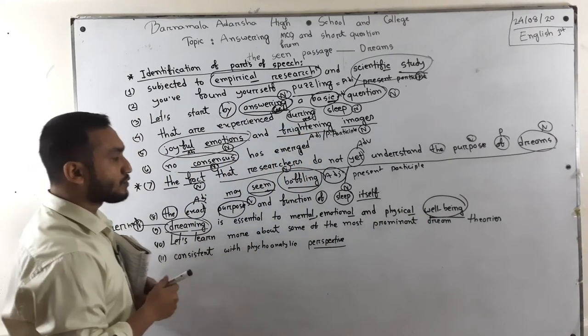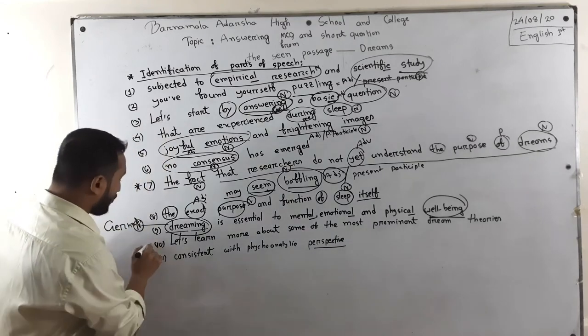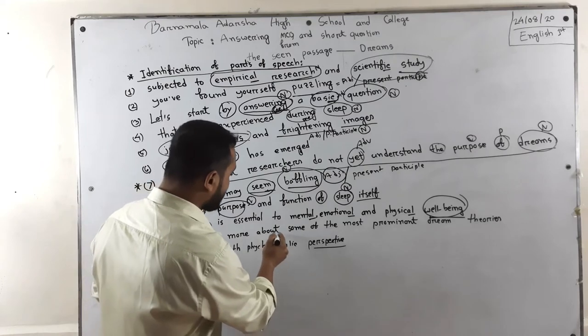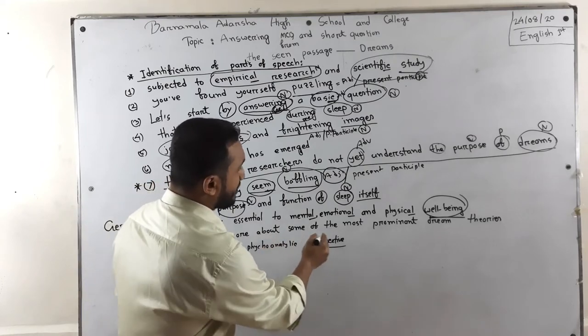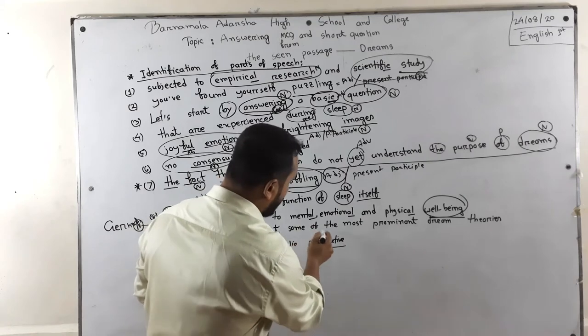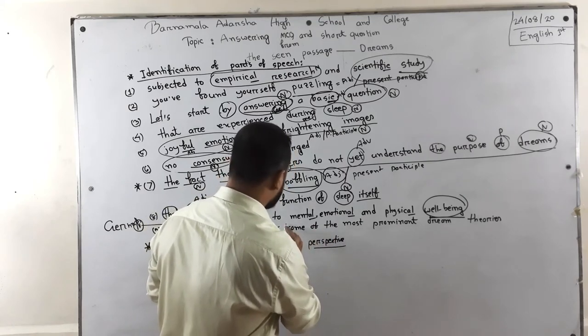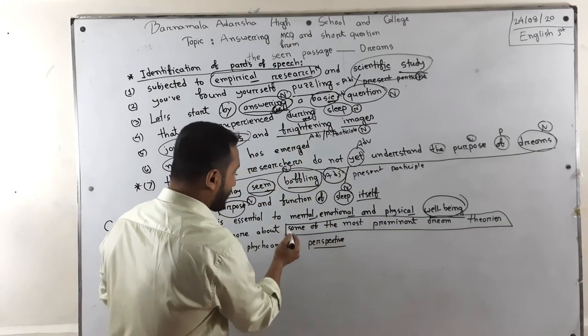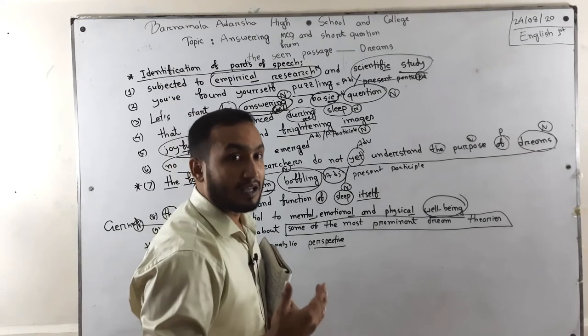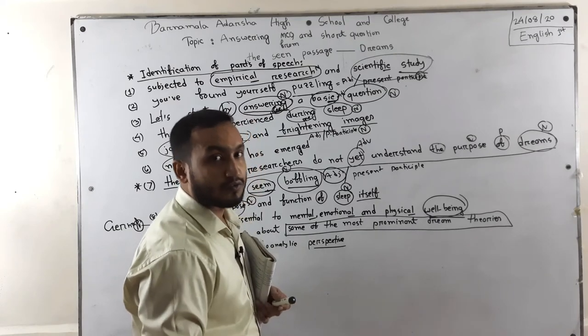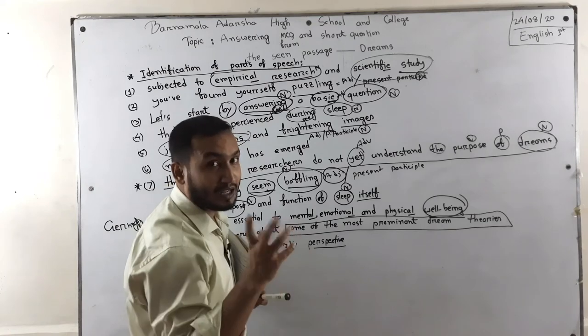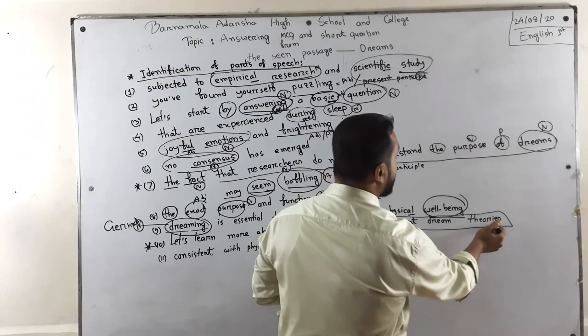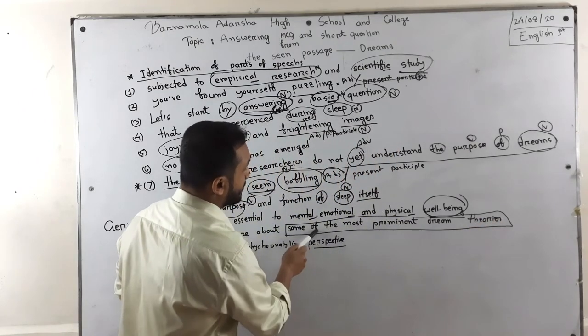Let's learn more about some of the most prominent dream theories. Here, 'some of' is very important - when you use 'some of,' 'many of,' 'either of,' or 'one of' before a noun, that noun must be plural. That's why it's 'theories' in plural form. 'Most' and 'prominent' are both adjectives modifying the noun 'theories.'